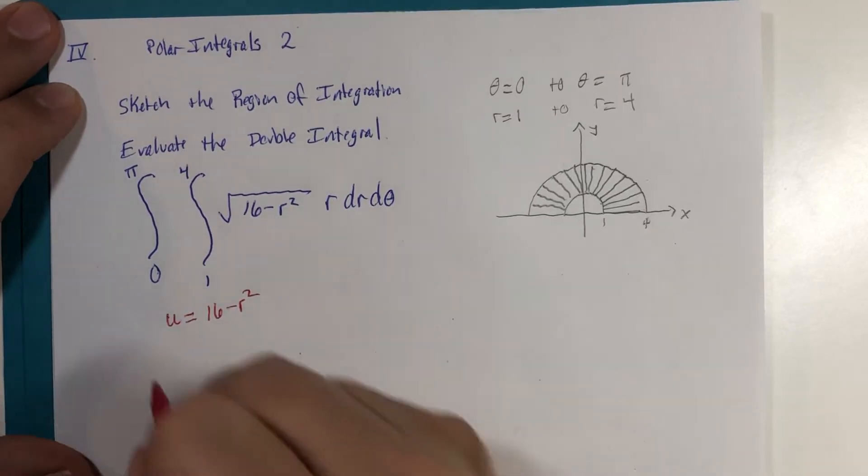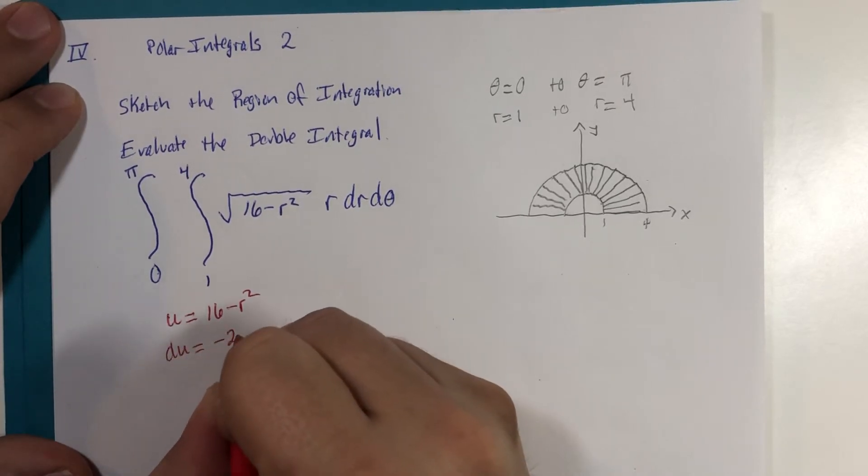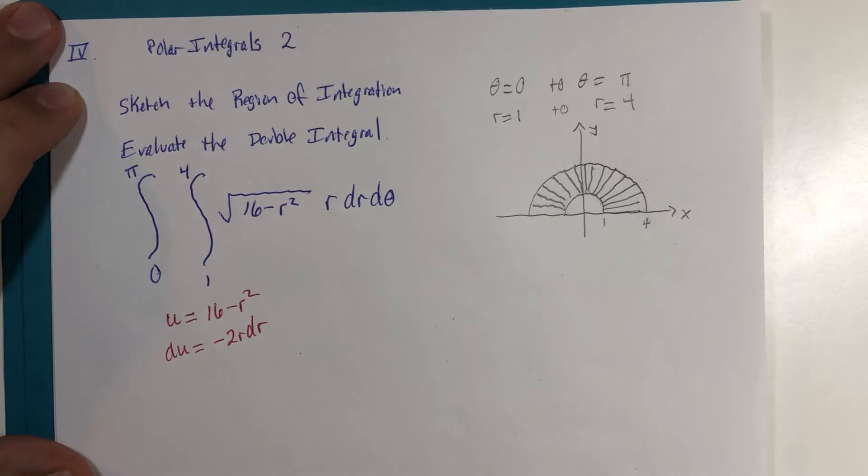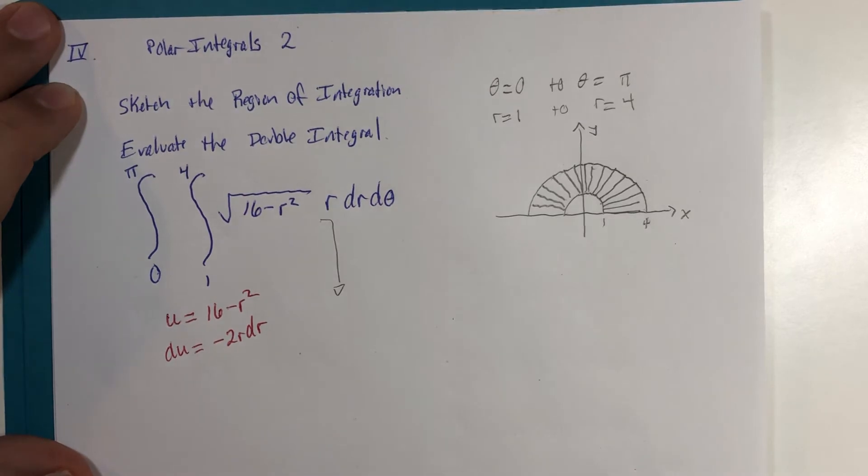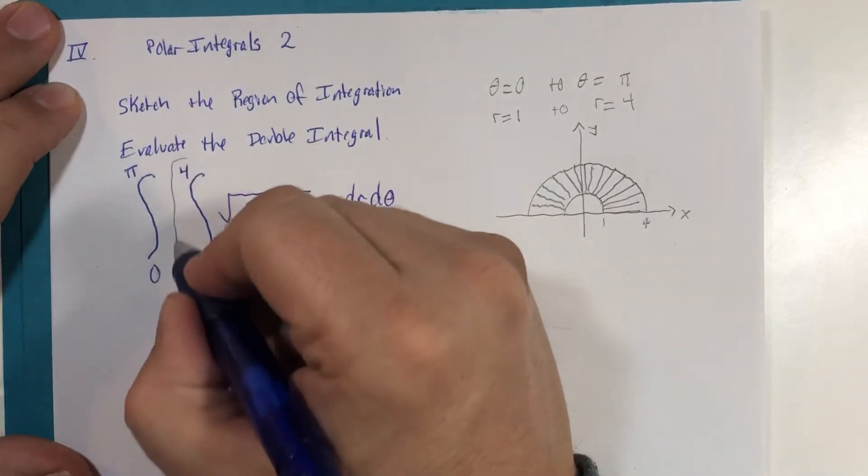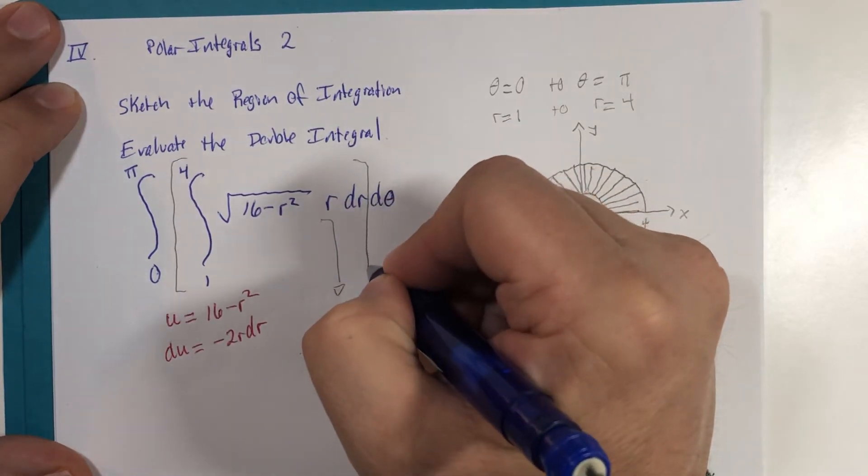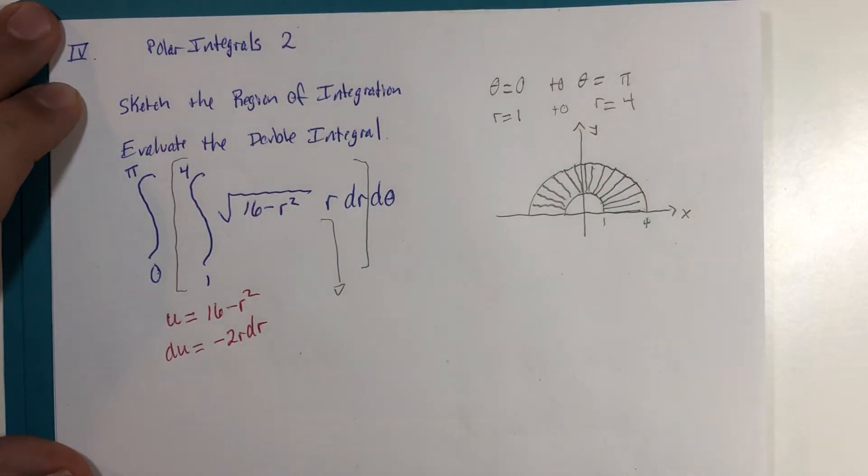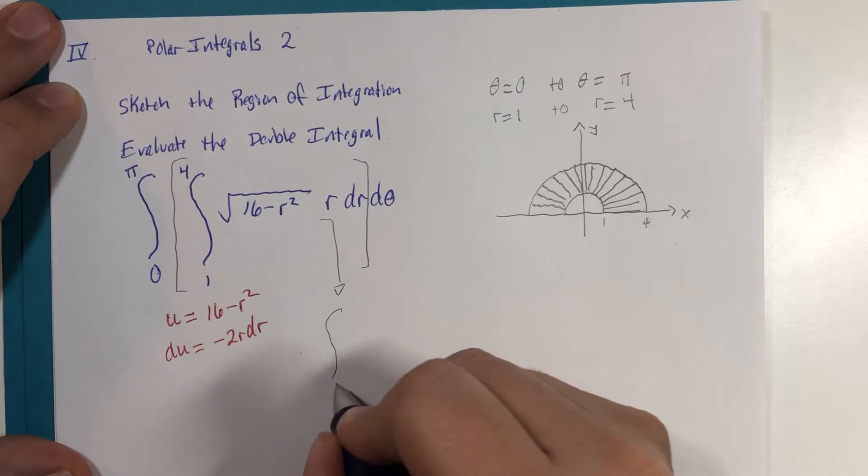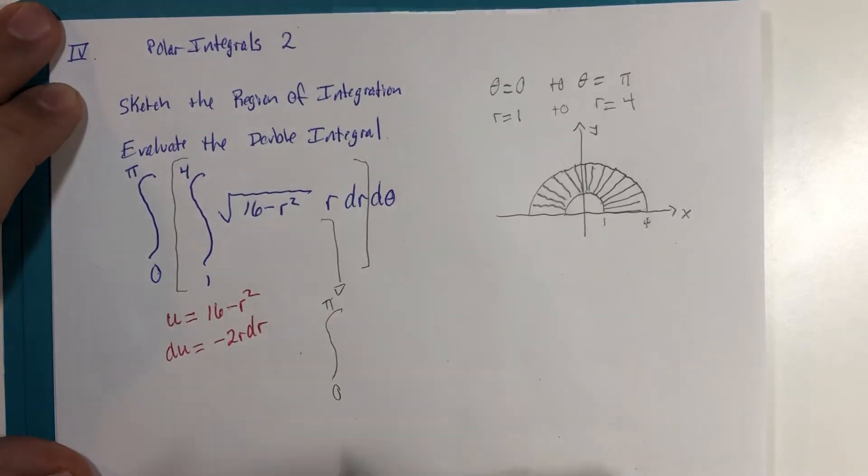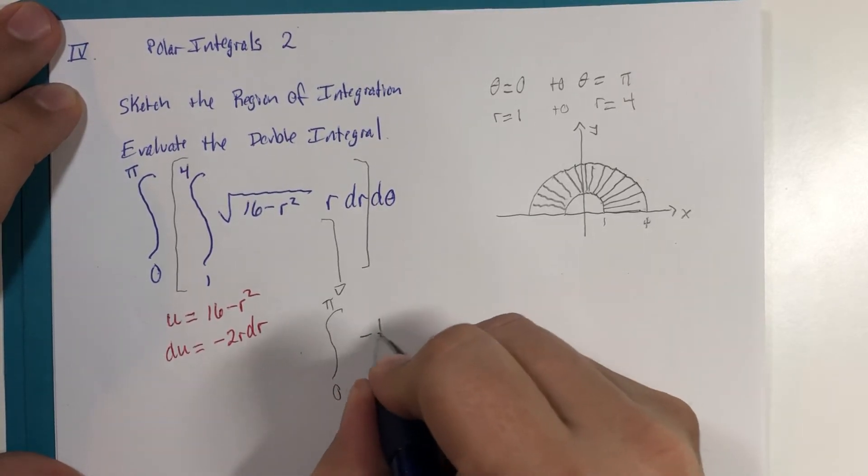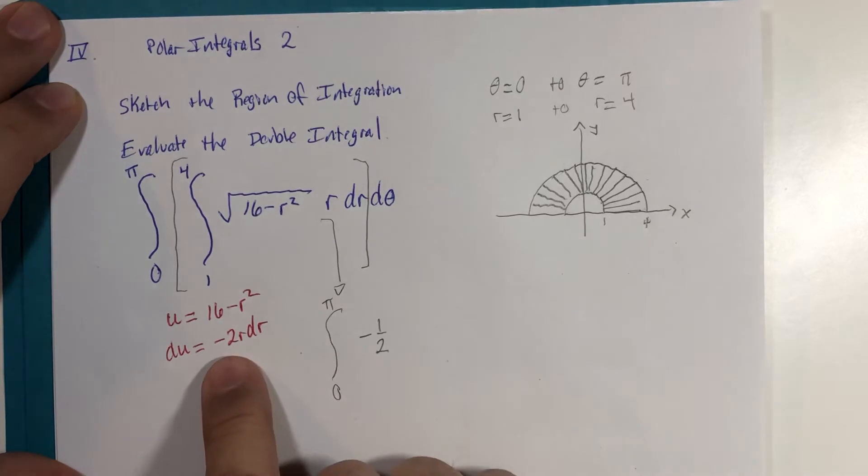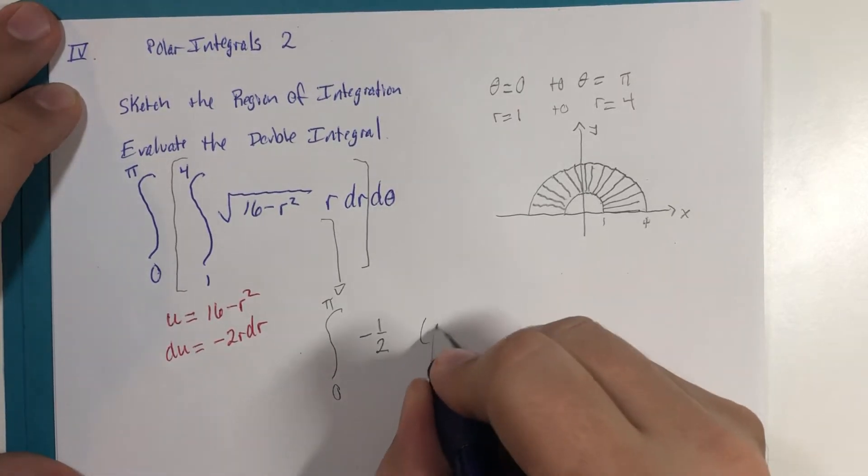u is 16 minus r squared, du is negative 2r dr. Then when we evaluate this stuff in an integral—and please recall there are operation brackets parentheses here that dictate we're going to integrate that way first—zero to pi still remains. We're going to have a coefficient of negative one-half because of this u substitution, and we will be integrating...